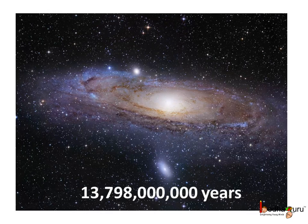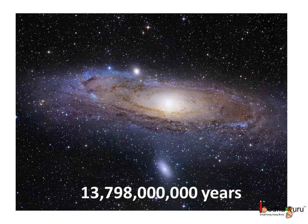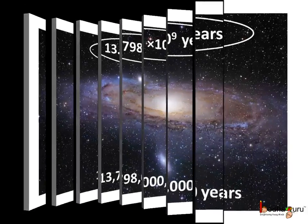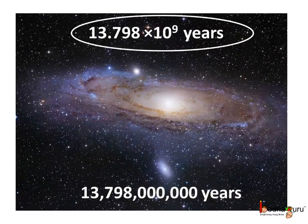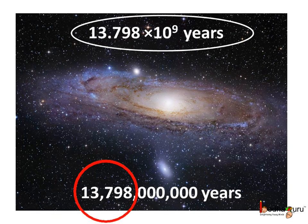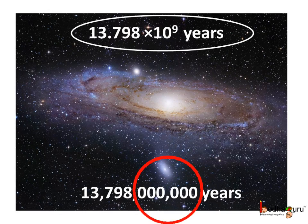Do you know what is the age of this universe? It's 13 billion, 798 million years. Now how to represent this easily? We have the digits 13798 followed by 6 zeros.